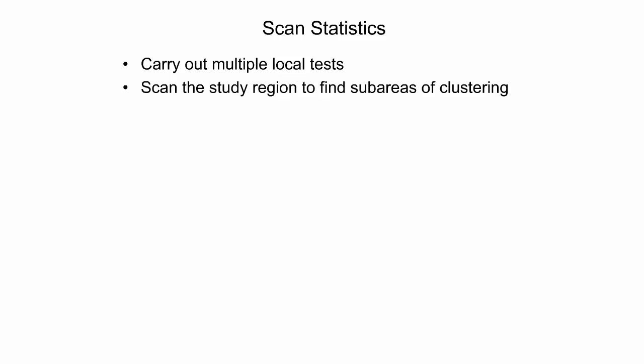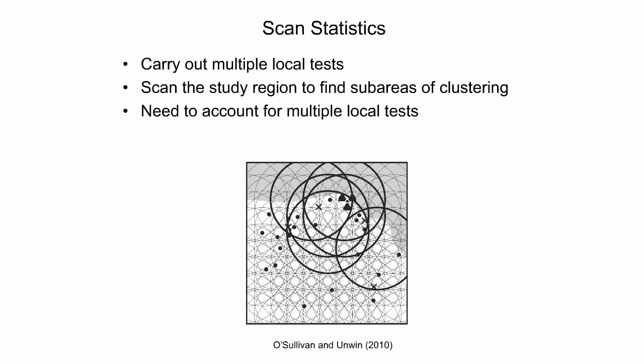Scan statistics are used to detect and evaluate clusters of cases in either a purely temporal, purely spatial, or space-time setting. This is accomplished by gradually scanning a window across time and/or space and noting the number of observed and expected observations inside the window at each location. The focus of this presentation is on the purely spatial scan statistic. A spatial scan statistic essentially carries out multiple local tests of the null hypothesis of no raised incidence in the local area across the entire study region. It needs to properly account for the multiple testing problem — otherwise several local tests would indicate areas as significant, although this occurred by chance alone. The end result of this procedure is a map of significant circles, where six circles with high incidence rates are drawn with heavier line weights.